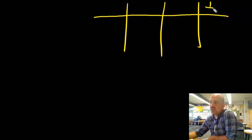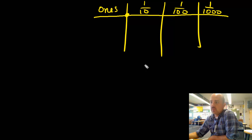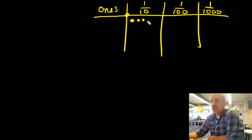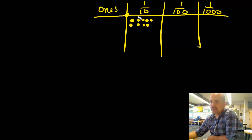We're going to start off by looking at a couple of problems using a place value chart. I want to have thousandths, hundredths, tenths, and ones — here's my decimal place. Let's start off by putting in nine disks or nine dots in the tenths column, so we're going to do nine tenths. I'll put nine tenths here: one, two, three, four, five, six, seven, eight — this represents nine tenths.